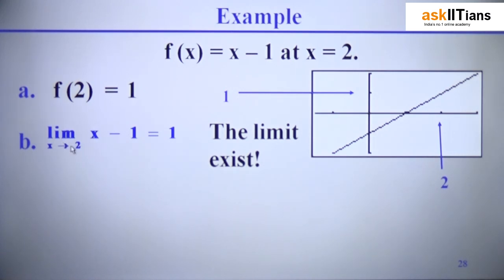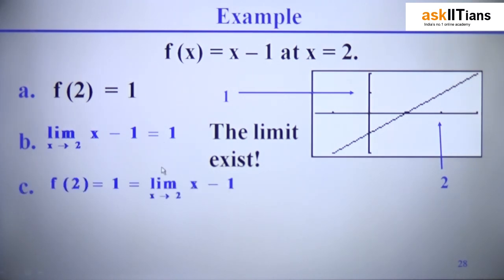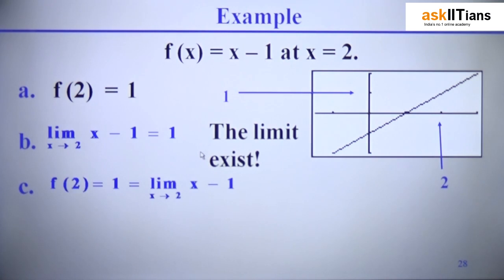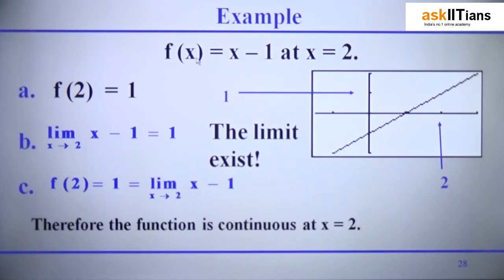Now we find the limit of (x − 1) as x tends to 2. Since this is a linear function, we use direct substitution, and the limit also equals 1. Since the value of f(2) and the limit as x → 2 are both equal to 1, from the definition of continuity we can say that f(x) = x − 1 is continuous at x = 2.